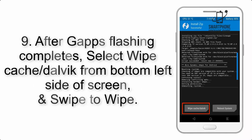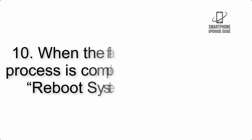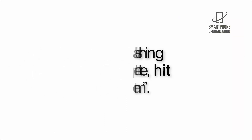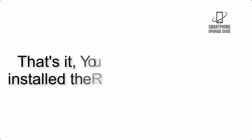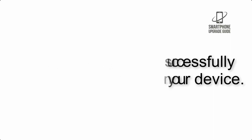Step 9: After GApps flashing completes, select Wipe Cache and Dalvik from the bottom left side of the screen and swipe to wipe. Step 10: When the flashing process is complete, hit Reboot System. That's it — you have successfully installed the ROM on your device.